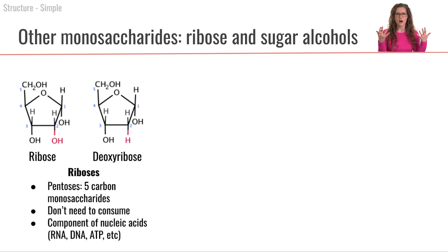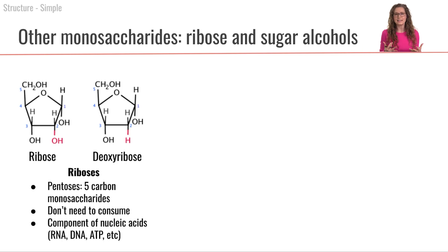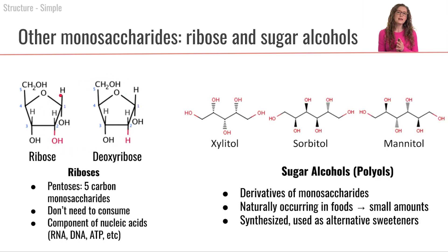What are some other monosaccharides that are important in our physiology? Another category are called riboses. Riboses are five-carbon carbohydrates — so these are pentoses — and these are important because they are required to form structures such as DNA, RNA, and ATP. If we look at DNA, it is deoxyribonucleic acid. That 'ribo' in there is referring to this deoxyribose, the five-carbon monosaccharide that is part of the DNA structure. Now we don't actually need to eat ribose from our diet — we can take ingested carbohydrates and use the chemical reactions and enzymes available to produce these within our body.